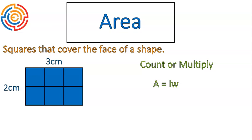So you can look at that rectangle: one, two, three, four, five, six. It has six squares that cover the face. That might work for some smaller rectangles, but oftentimes you'll use the multiplying method using that formula — length times width. Notice that the answer we got, six, is the same as if you multiply those two numbers: three times two. Three times two gives you six. Your answer for area is always in square units because it's the squares that cover that face. So the area of this rectangle is six square centimeters, because it would be six squares that are one centimeter by one centimeter to cover it.